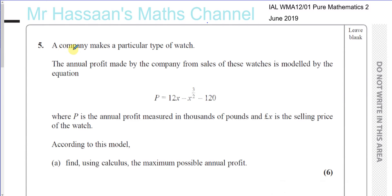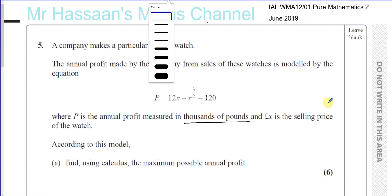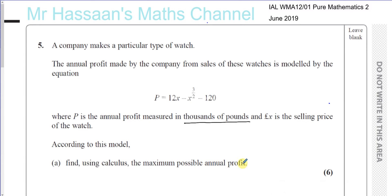A company makes a particular type of watch. The annual profit made by the company from the sales of these watches is modeled by the equation P equals 12X minus X to the power of 3 over 2 minus 120, where P is the annual profit measured in thousands of pounds. And X is the selling price of the watch.